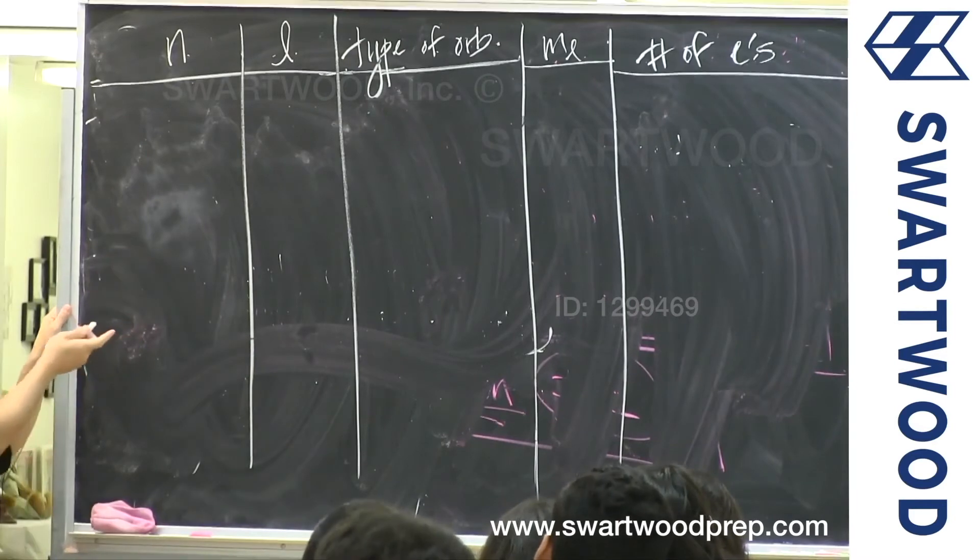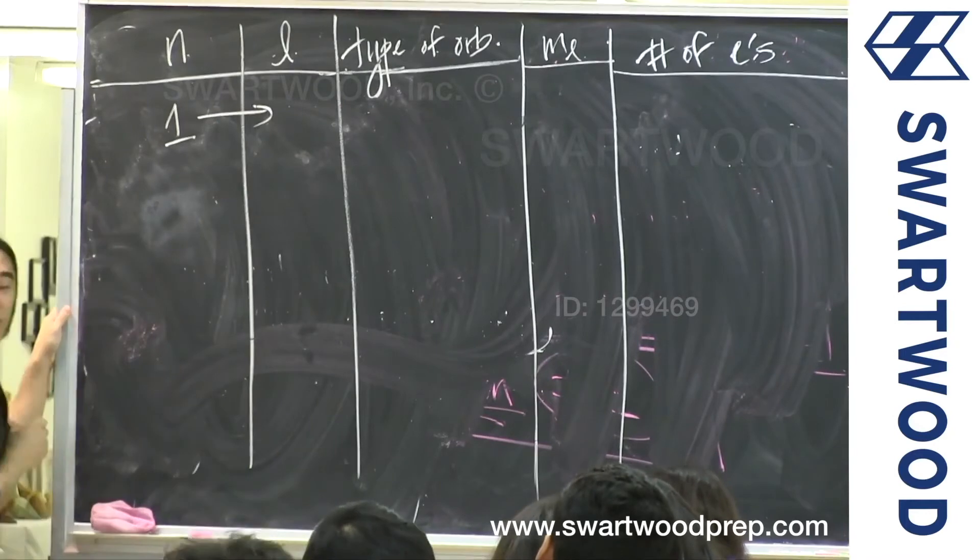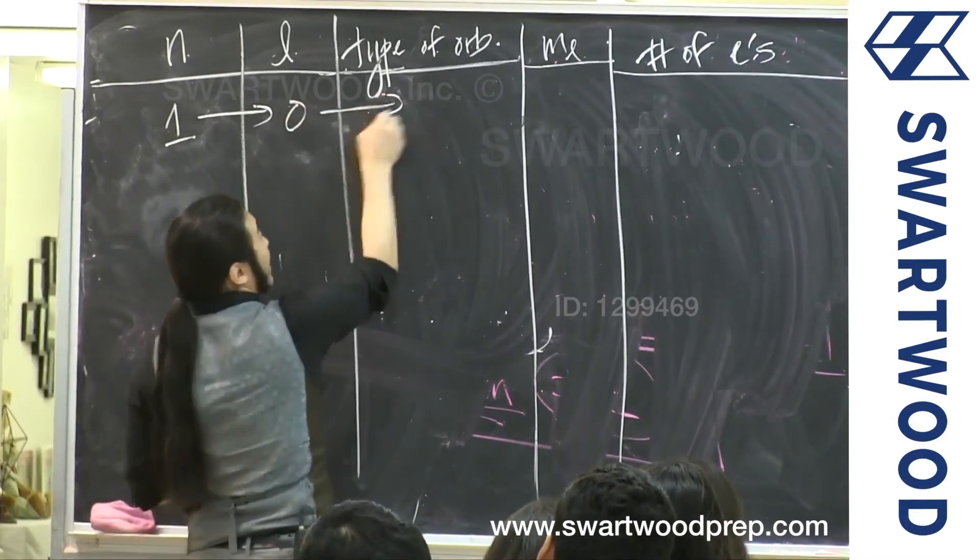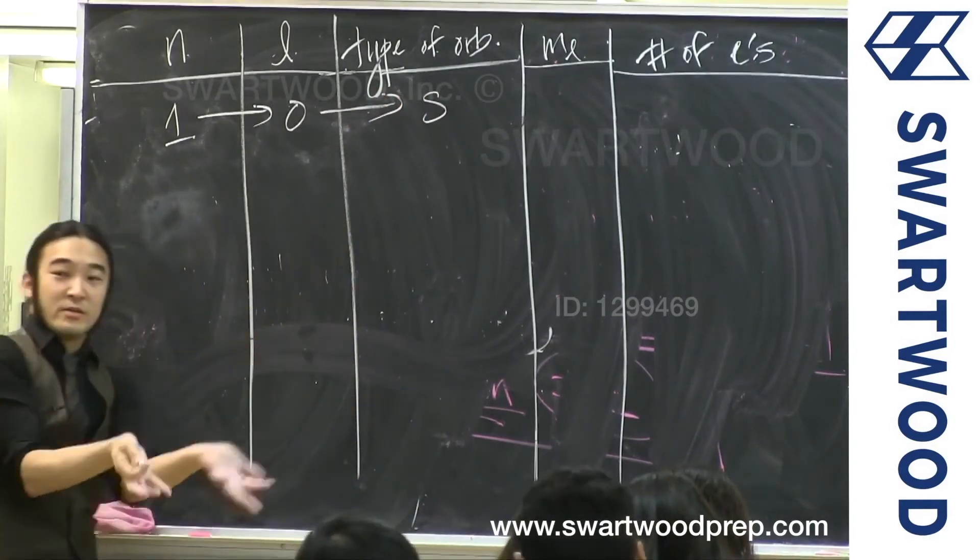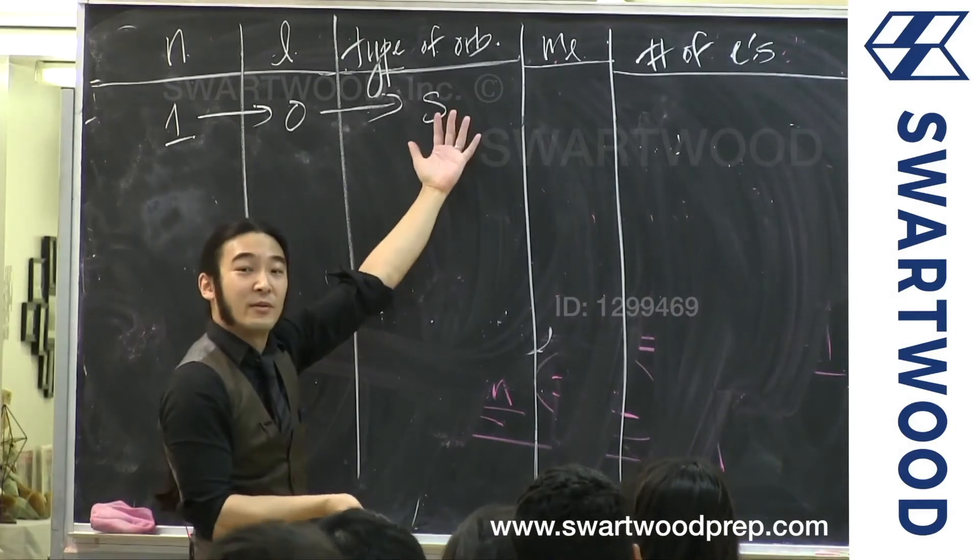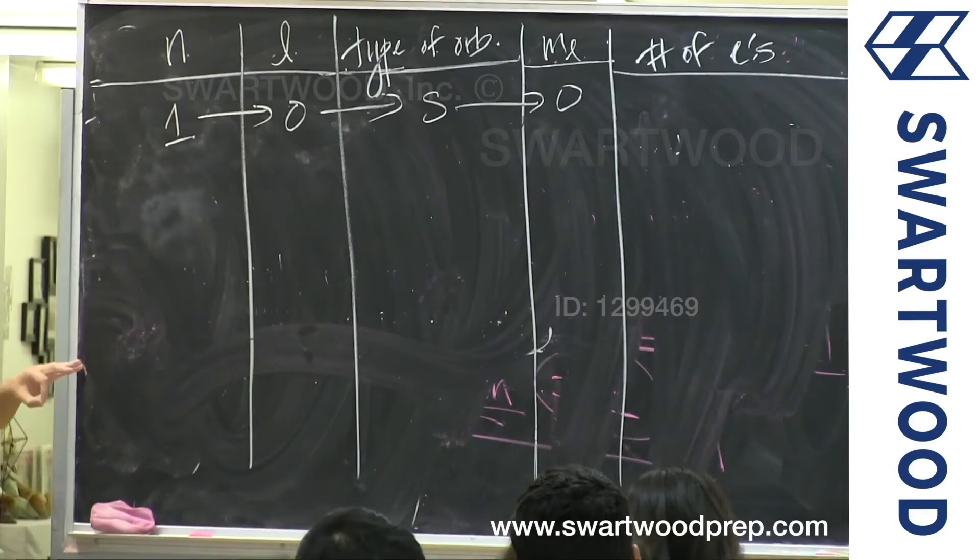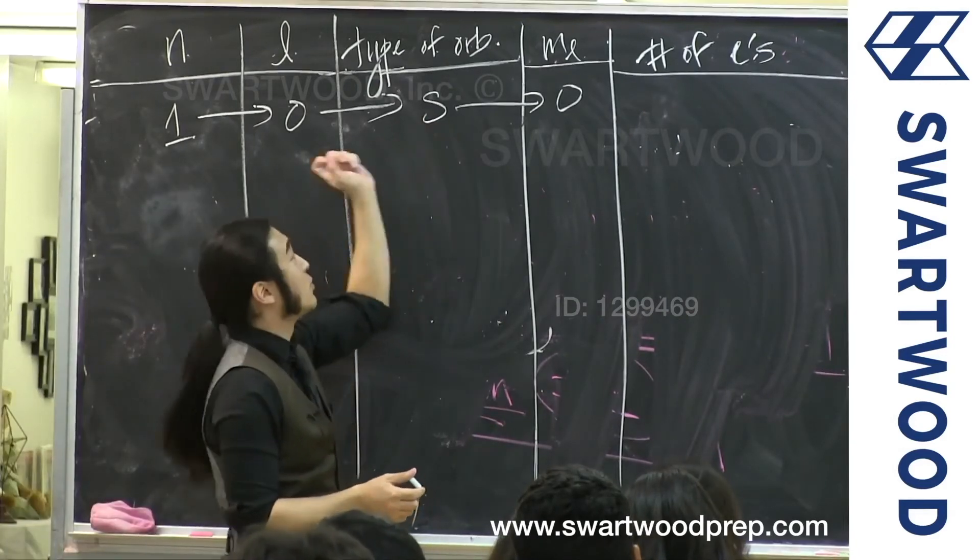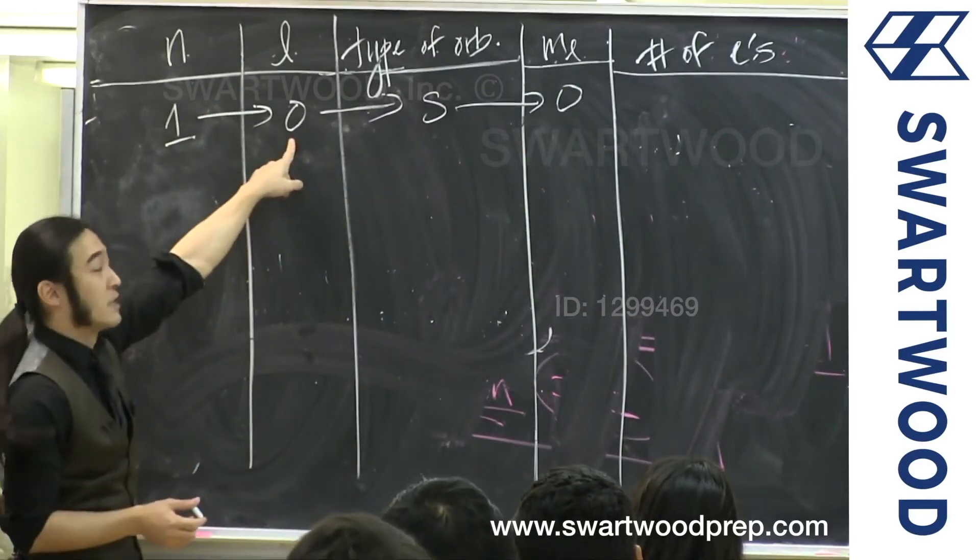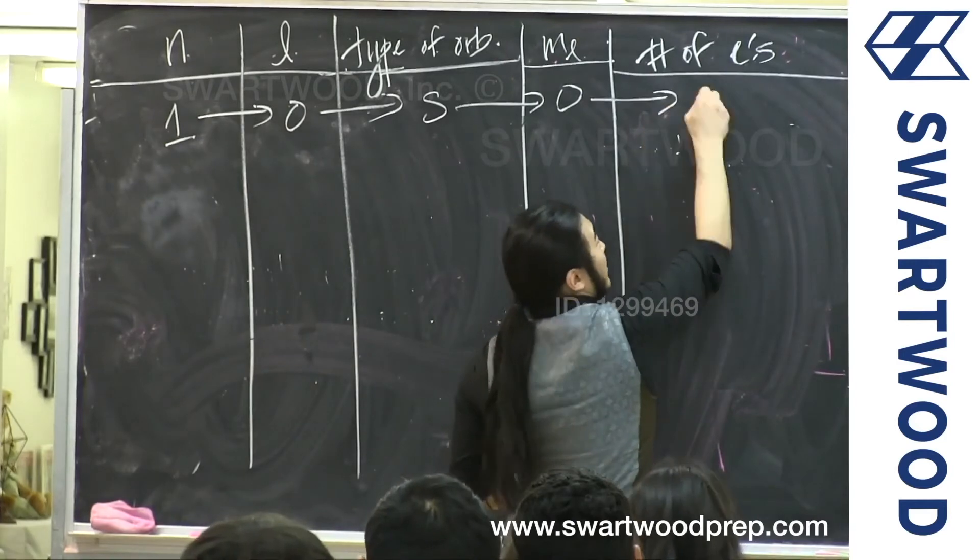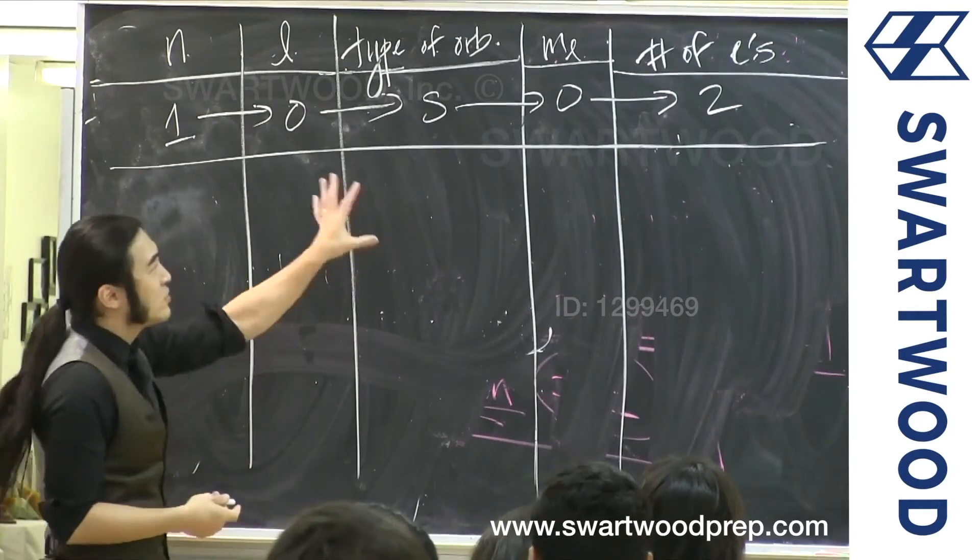So what's the first energy level you can have? Obviously n equal to 1. What's the only L value allowed? Zero. Zero just tells you what? What's the type of orbital you can have? S. And since there's only one way you can orient a sphere, he just needs a name. What's the most convenient name for him? Zero. Remember, ML runs from negative L to positive L. But all that means is you're just naming him. There's only one guy. Might as well just call him zero. How many electrons can you hold? Two.